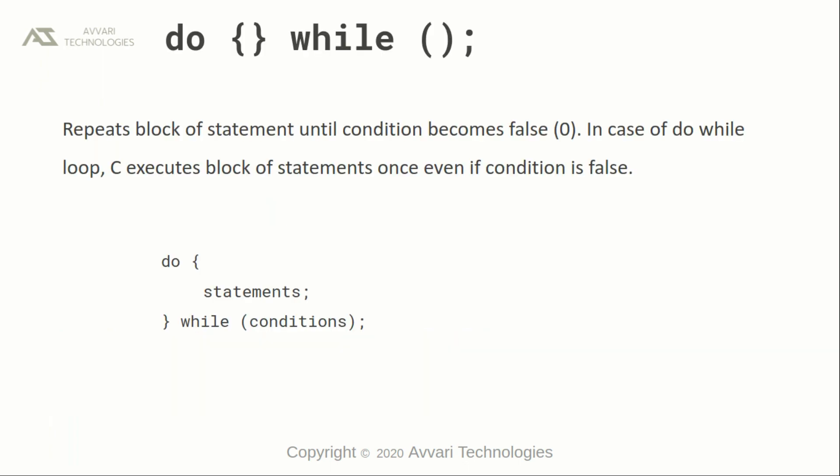Do-while statements repeat a block of statements until the condition becomes false in the while part. The difference between the while loop and the do-while loop is that the do-while loop executes at least one time, regardless of the condition mentioned in the while part. Do-while loop will execute at least once, then it will check the condition, then it will behave as the while loop.